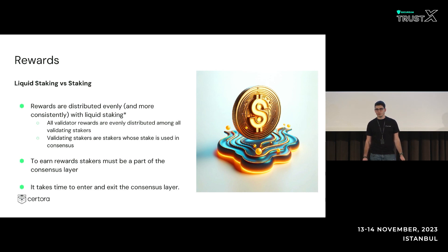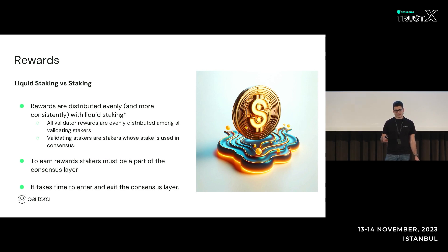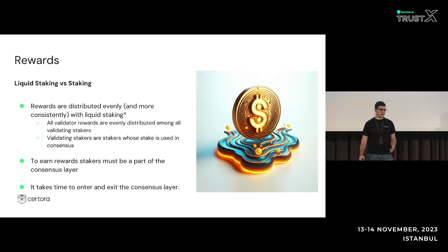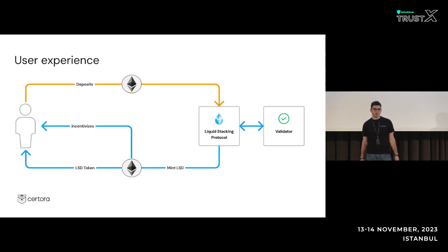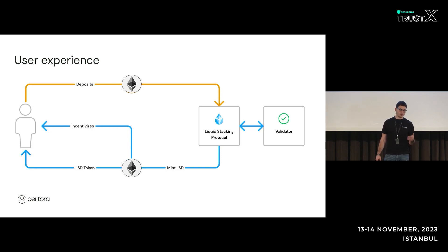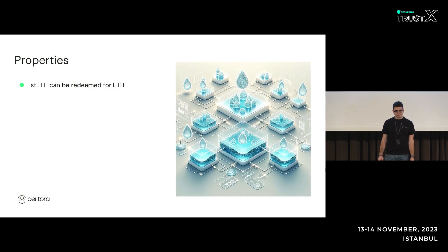The stakers that are staked to validators and taking part in consensus should earn rewards, and you must be part of the consensus layer. It takes time to enter and exit this consensus layer. Here's a little diagram of how this all happens: you stake your ETH, you get some derivative. The derivative represents the rewards you earn for the job that the validator does.